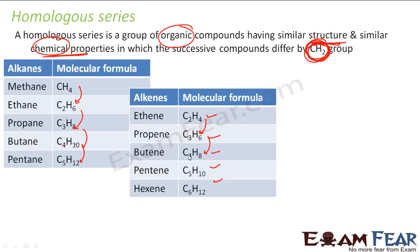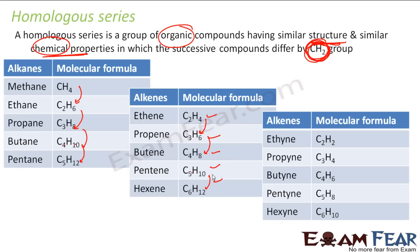Comparing successive alkenes: each one has 1 carbon and 2 hydrogens more than the previous one. If you take these two, again 1 carbon and 2 hydrogens. Correct?